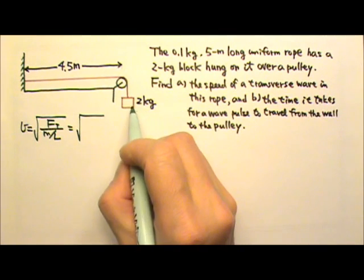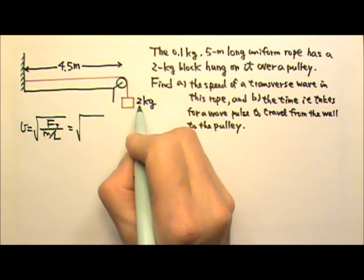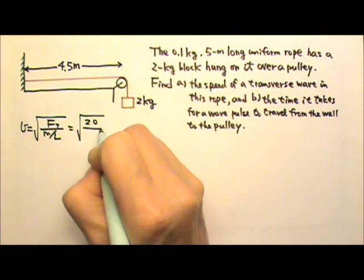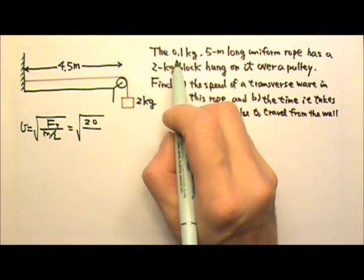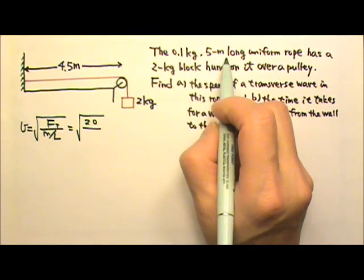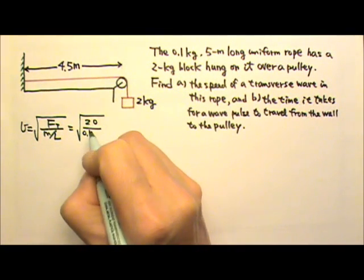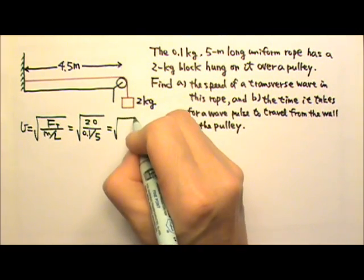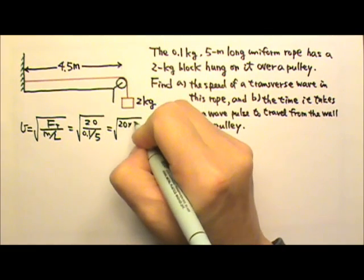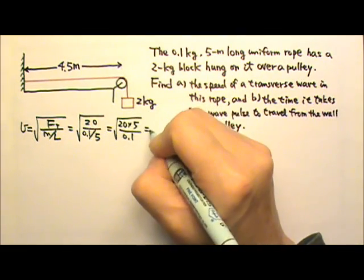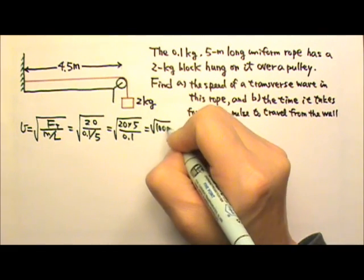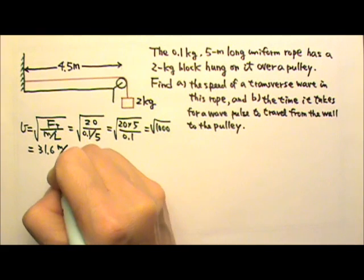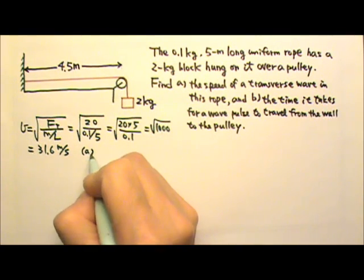In this case, the tension is provided by the hanging block. Since the block is 2 kg, the tension is 20 N. The mass per unit length is 0.1 divided by 5. So this gives us the square root of 20 times 5 divided by 0.1, which is the square root of 1000, giving us 31.6 meters per second. That's the answer for part A.